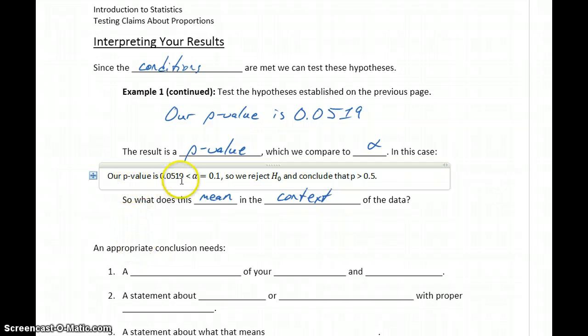So we reject the null hypothesis and conclude that our population proportion must be greater than 50%. So we take the p-value, compare it to alpha. In this case, it's smaller than that value. So we're saying the probability that our results were due to chance are very small. So we throw out that null hypothesis. There's enough evidence to reject that statement. And we conclude that p must be greater than 0.5 since that's our only alternative.